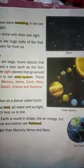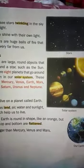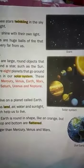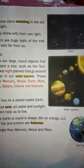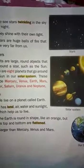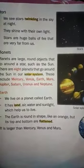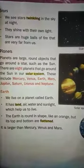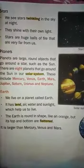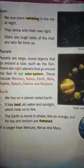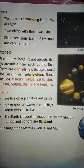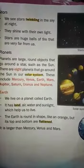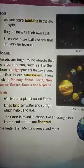The solar system is made up of the sun and all the smaller objects that move around it. There are eight planets: Mercury, Venus, Earth, Mars, Jupiter, Saturn, Uranus, and Neptune.